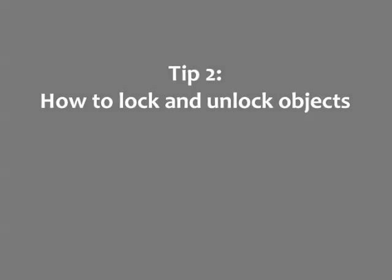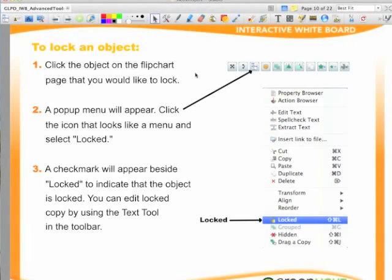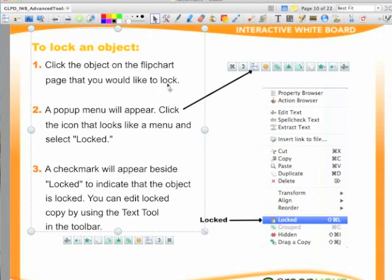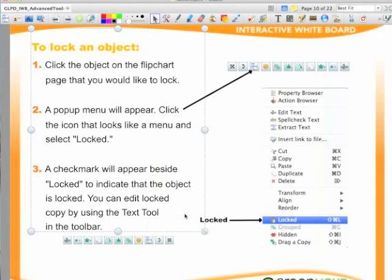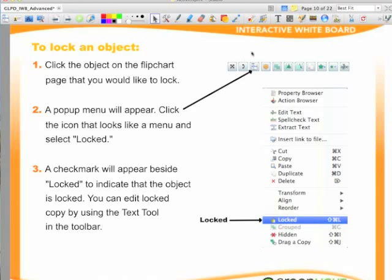Tip 2: how to lock and unlock objects. To lock an object, click the object on the flip chart page that you would like to lock. I want to lock this text box. A pop-up menu will appear. Click the icon that looks like a menu and select Locked from the drop-down menu. A checkmark will appear beside Locked to indicate that the object is locked. You can edit locked copy by using the text tool in the toolbar.